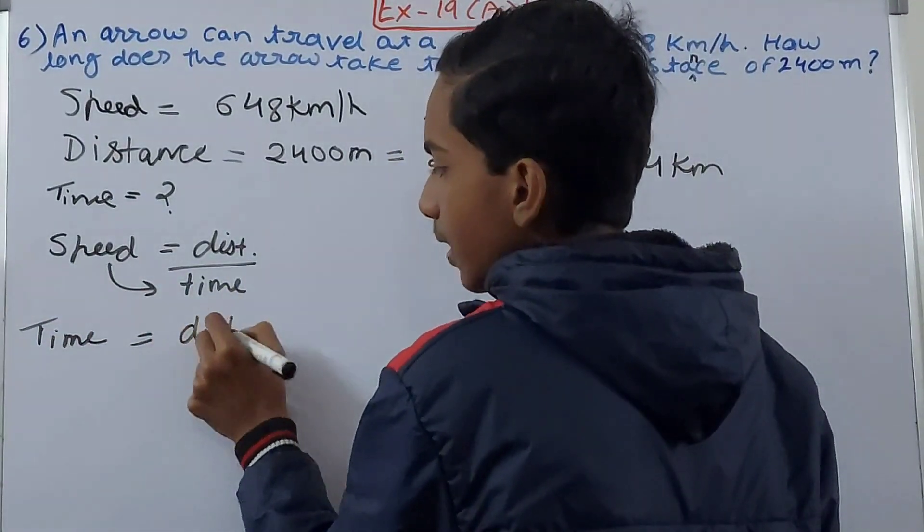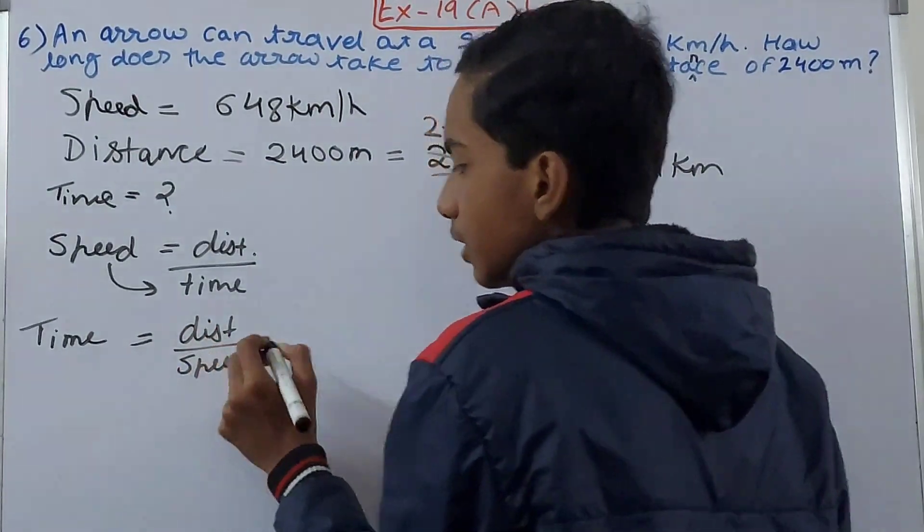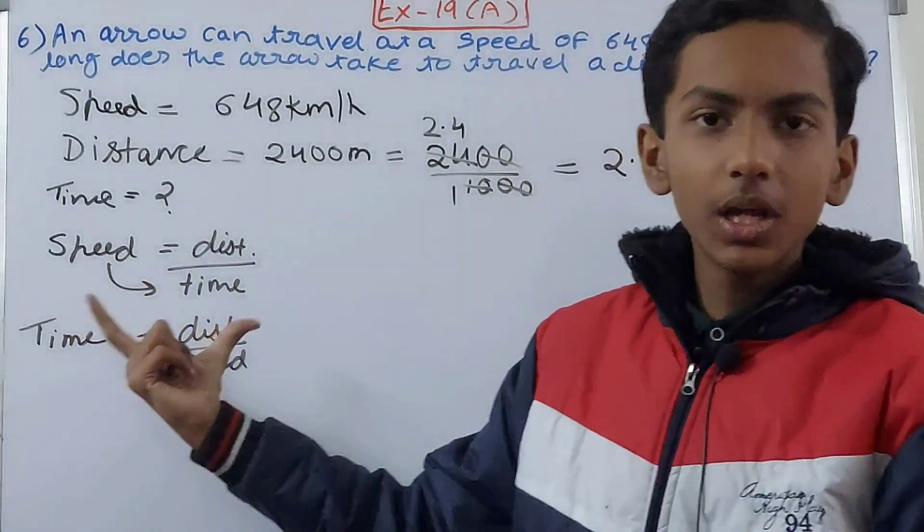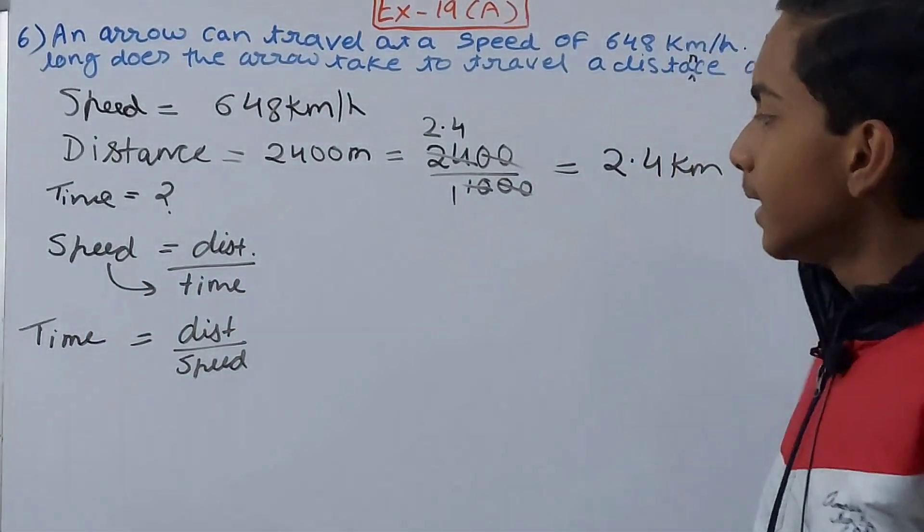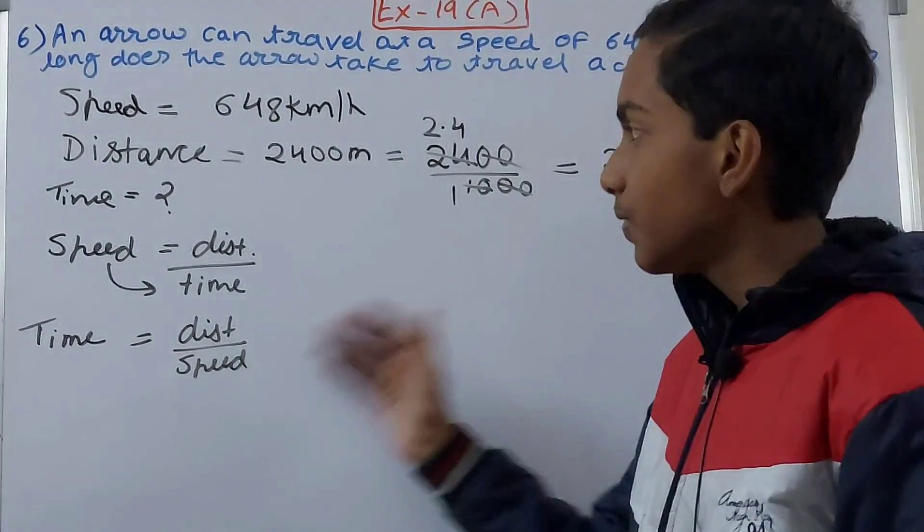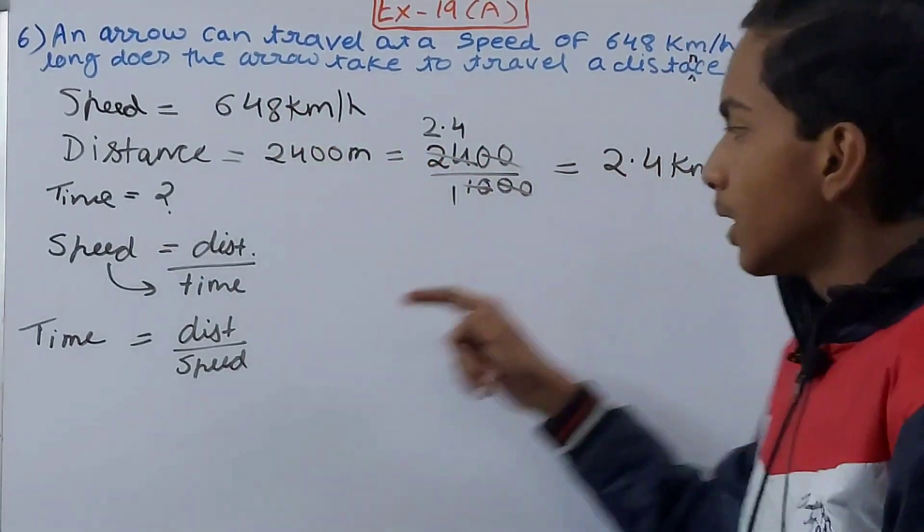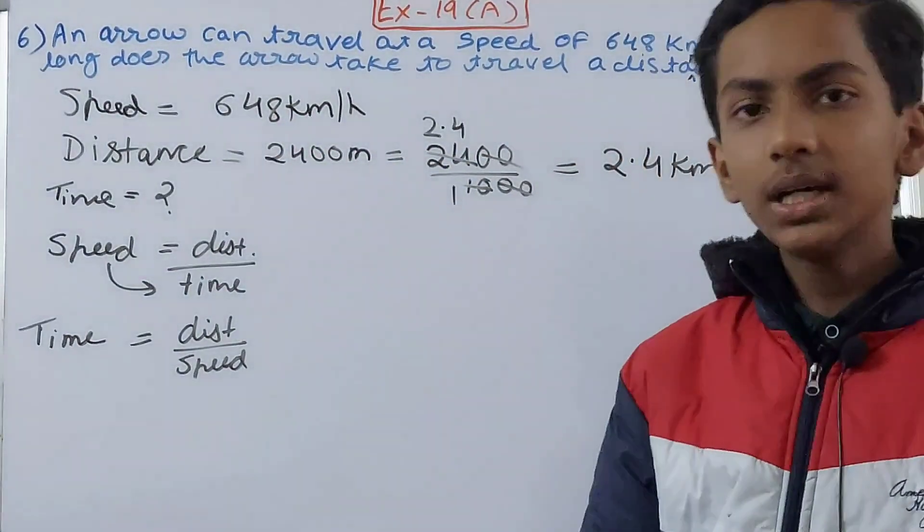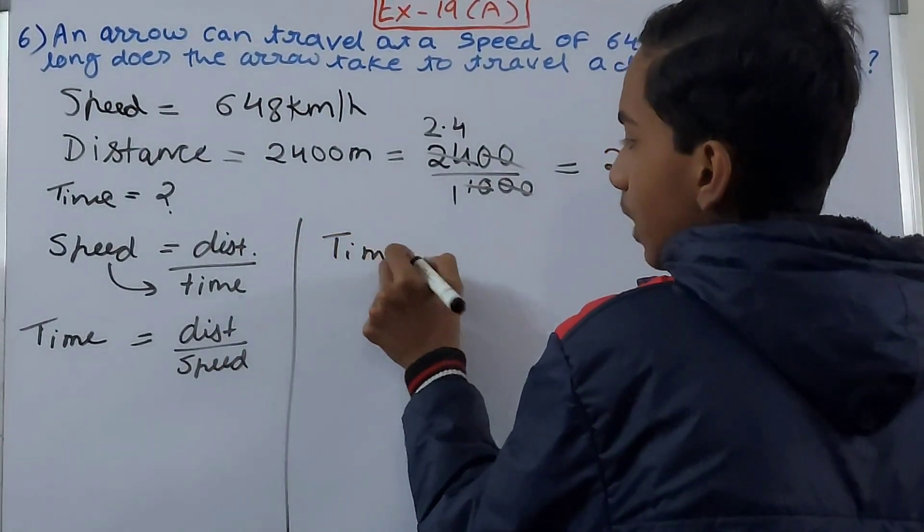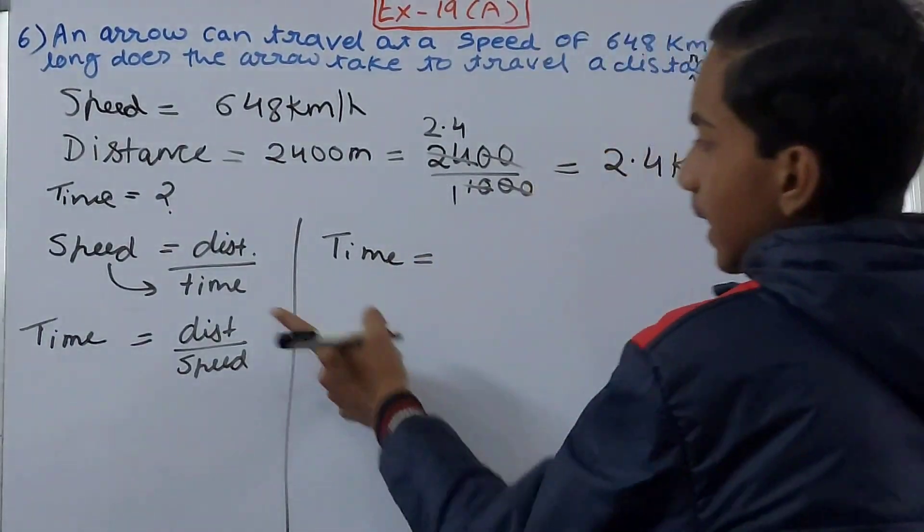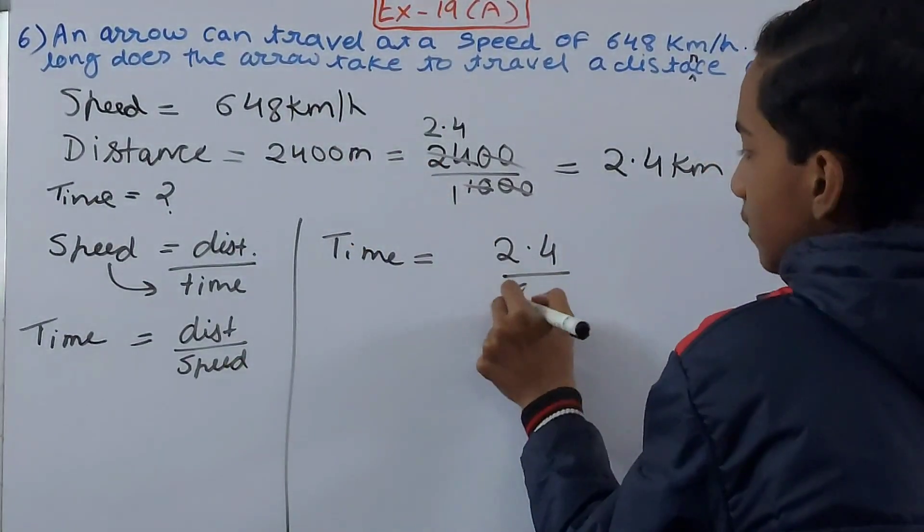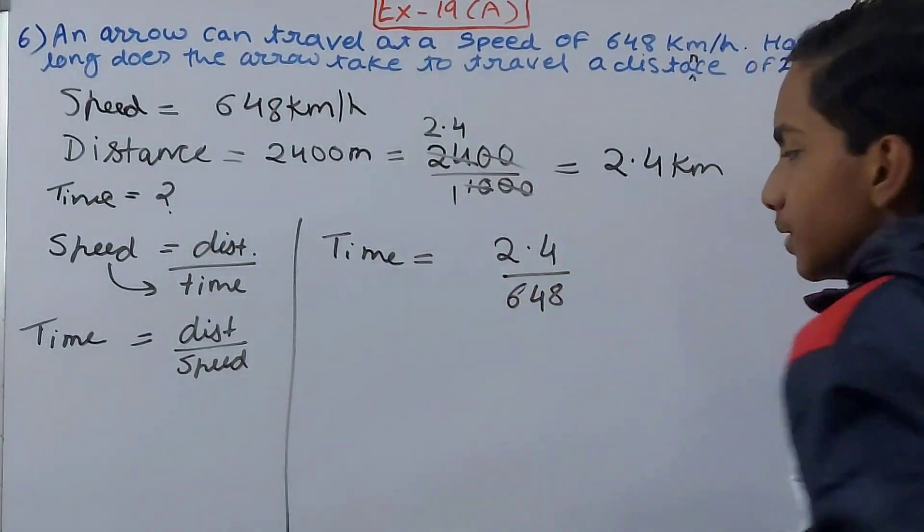See, just memorize one formula and you can form the others very easily. So now you see that we know the distance, we know the speed. Speed is this, this is the distance, so we can easily find out the time. So time equals, now input all of the values: distance is 2.4 kilometers divided by the speed that is 648 kilometers per hour. This is what it will be.